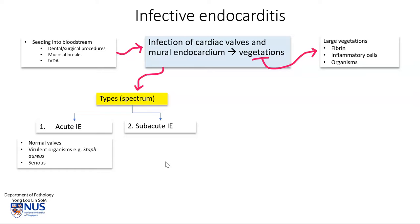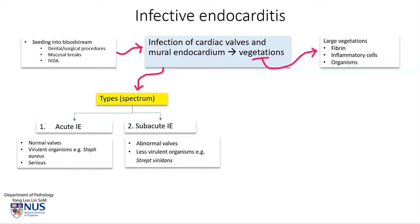Subacute infective endocarditis usually occurs on the background of abnormal valves — these are the patients who are at risk. Abnormal valves include congenital abnormalities such as a bicuspid aortic valve, or maybe prosthetic valves. The organisms are usually less virulent.